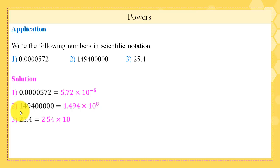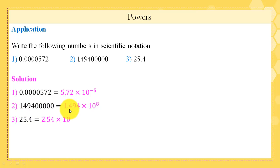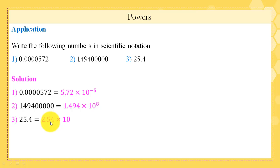For 149,400,000: it is an integer, so place the decimal point behind the last numeral and move it to the left to make the number between 1 and 10. We move 8 places and place the point between 1 and 4, getting 1.494. The power of 10 is 8 since we moved left, so 149,400,000 is 1.494 times 10^8. Finally, 25.4 is 2.54 times 10, since 2.54 is between 1 and 10 and we move 1 place to the left.